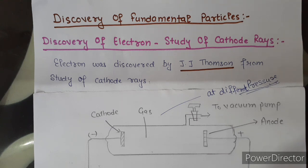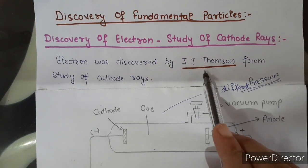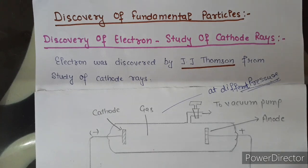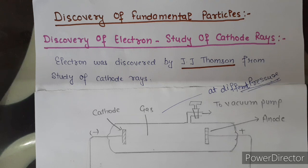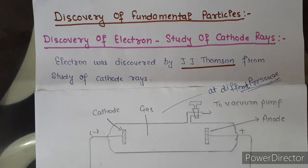The first discovery is that of the electron. Electron was discovered by the scientist J.J. Thomson from the study of cathode rays. Earlier work on conduction of electricity through gases was done by Faraday in the first half of the 19th century. And the discovery of electron came as a result of the study of conduction of electricity conducted by William Crookes in 1879.